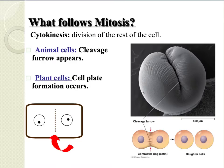Cytokinesis is what follows mitosis. This is a division of the rest of the cell, including the cytoplasm and the organelles. In animal cells we see a cleavage furrow appearing, and in plant cells we see a cell plate, which will later become the cell wall of the two new cells.